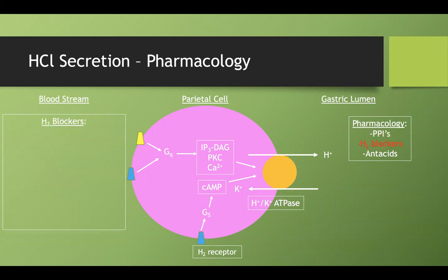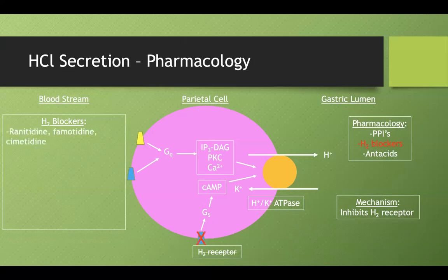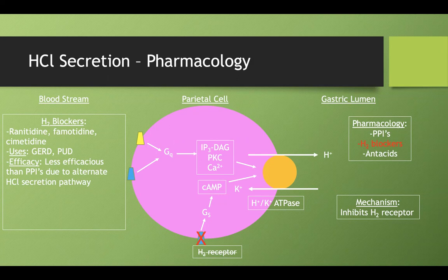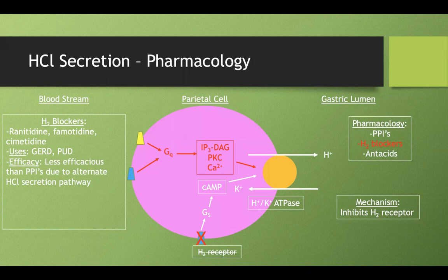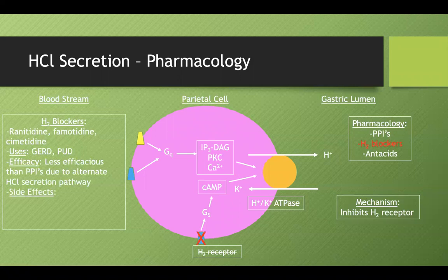Next, histamine blockers or H2 antagonists — they inhibit the H2 receptor. Common names include ranitidine, famotidine, and cimetidine. They're used for similar indications but are less efficacious than PPIs, because blocking the H2 receptor only stops one part of the pathway — hydrogen ion production can still occur through the other pathways. For side effects, cimetidine is heavily tested: it's a P450 inhibitor and is associated with gynecomastia and impotence.